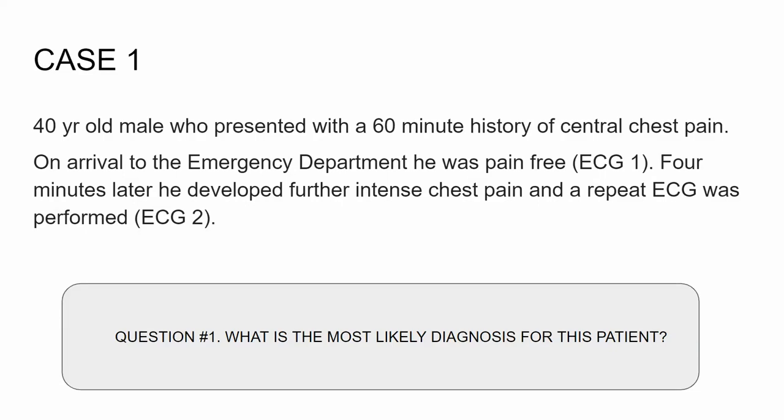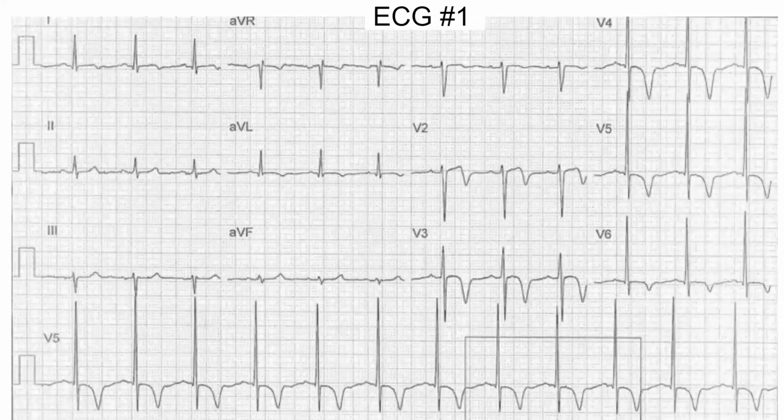Case number one: a 40-year-old male comes in with a history of chest pain, comes into the emergency department. He was pain-free. Then four minutes later, he had more chest pain and he got a repeat EKG. So the first EKG: we see a lot of T-wave inversion down there in the lead five rhythm strip. We wonder about ischemia because V4, V5, and V6 all have what looks to be some T-wave inversion, even around V3.